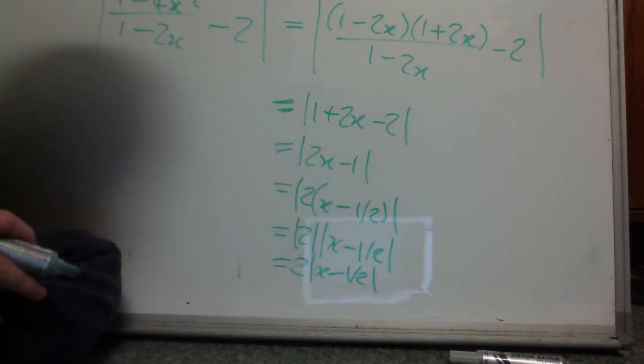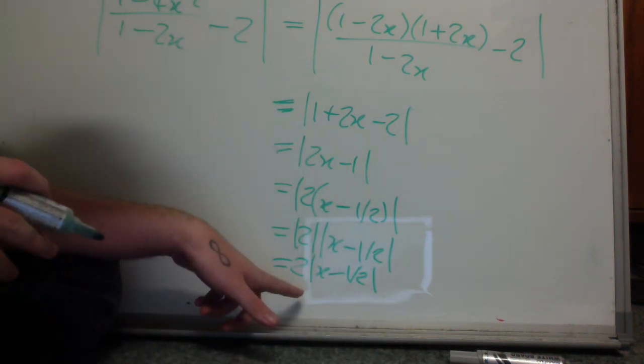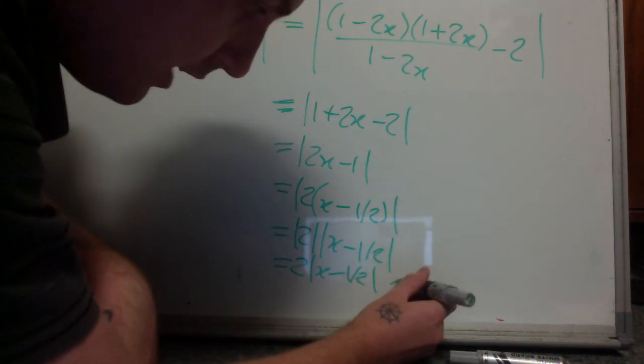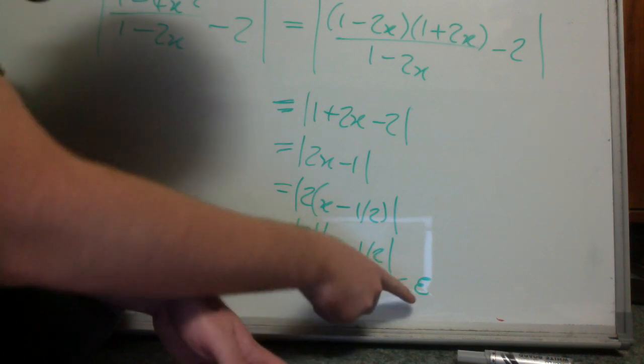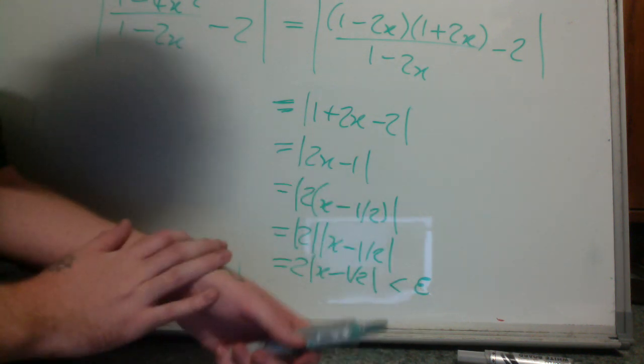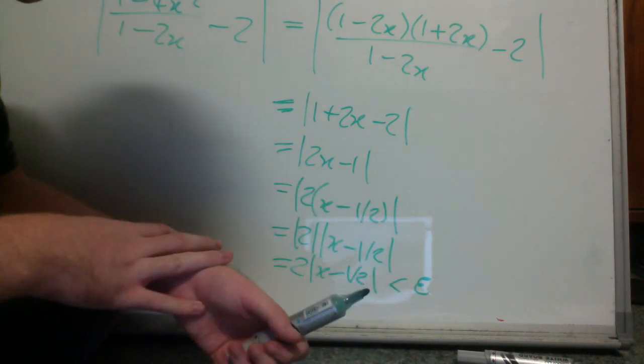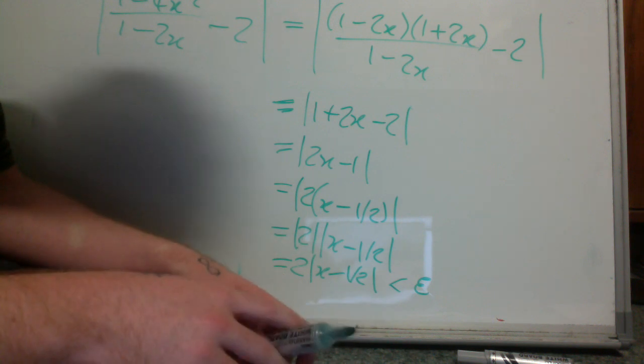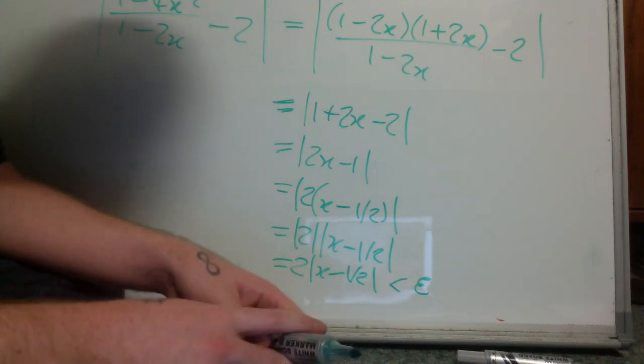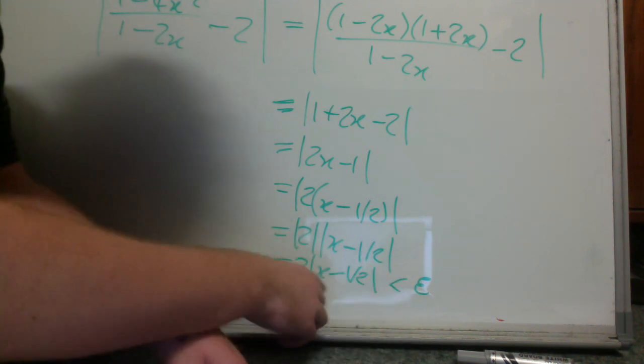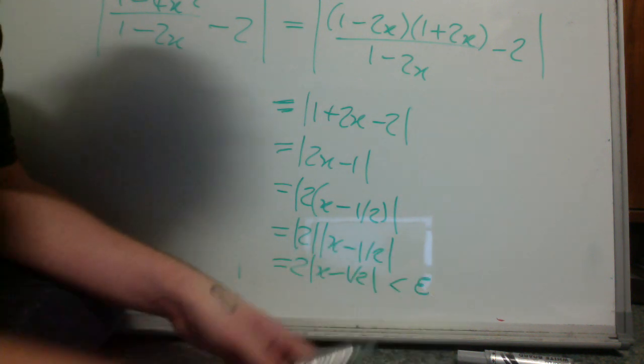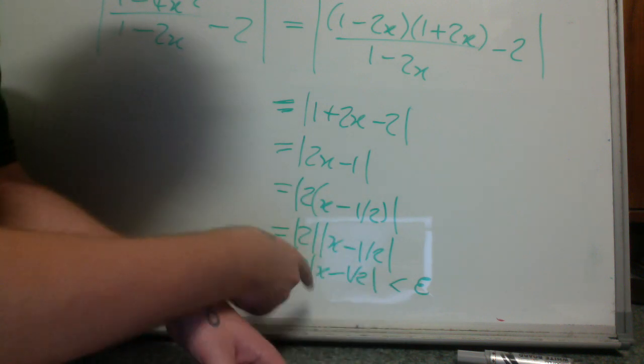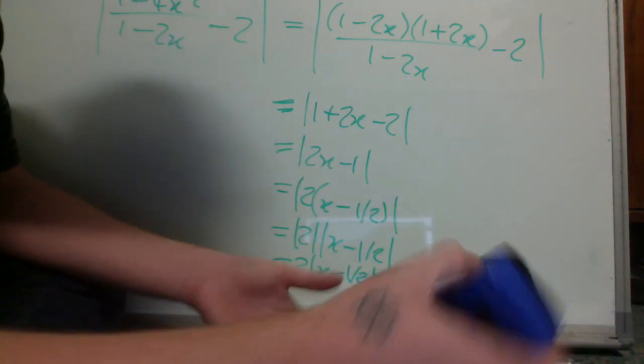This is looking good. Now I'm going to put in the less than epsilon. You can see what we're going to do: we're going to divide by 2 and we get epsilon over 2. That's our value of delta. Note that this is x minus what x is tending to, so that's what we were trying to do.